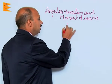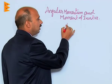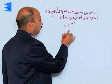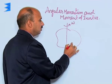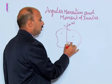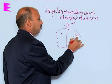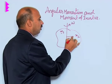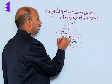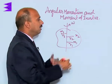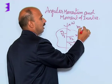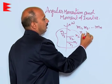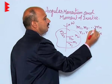Now we will discuss the relation between angular momentum and moment of inertia. Consider a rigid body rotating about this axis with angular velocity omega. The body is supposed to be made of a large number of particles m1, m2, mn at distances r1, r2, and rn.